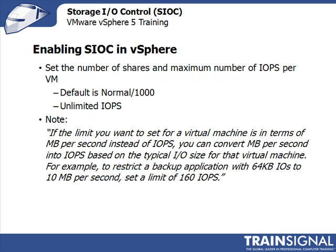It's super simple. Once enabled, you'll want to set the number of shares and the maximum number of IOPs per virtual machine. This is optional — if you want all virtual machines to have the same priority in the Storage I.O. queue, you don't have to configure shares on every VM. But if you want certain VMs to have higher or lower priority, or want to configure a maximum number of IOPs on particular VMs, you can do that.